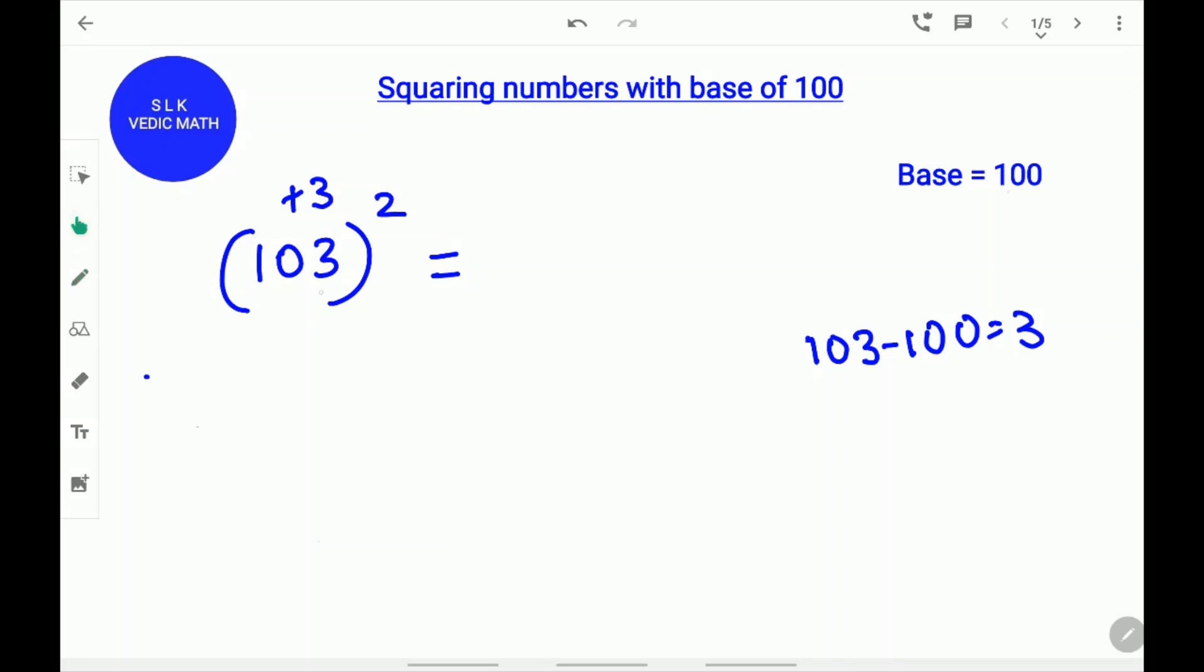Now, add this difference 3 to 103. 103 plus 3 is 106. Write 106 over here.